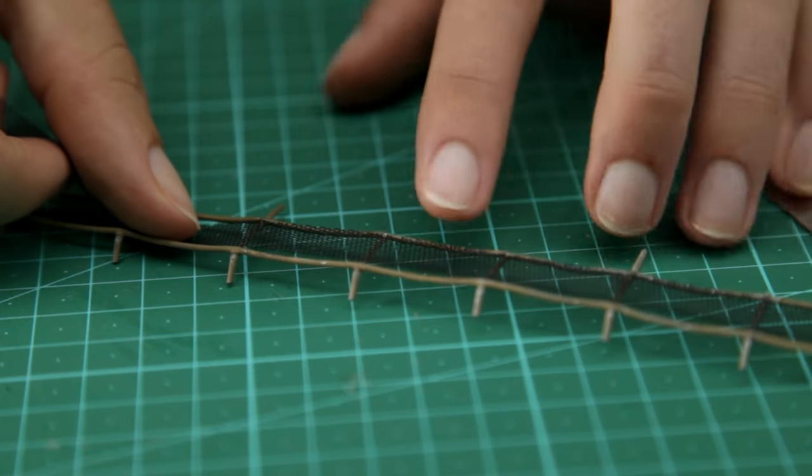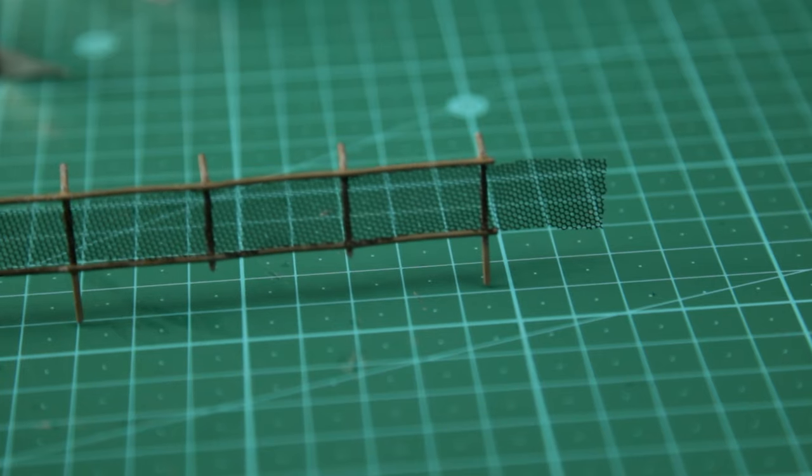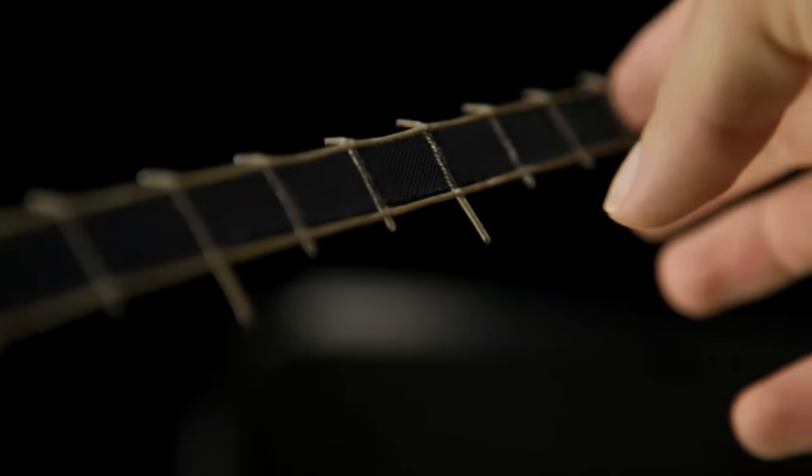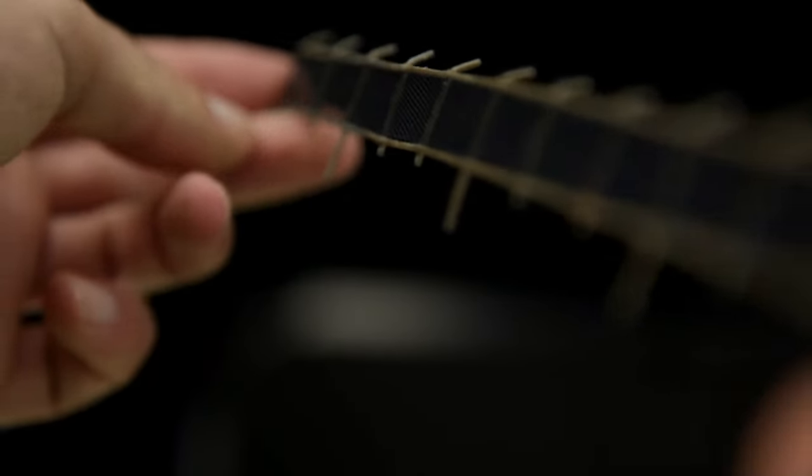The superglue I'm using is from Loctite and it's a gel superglue. It's quite expensive but it's worth it because it's easy to use and really strong. Once done this is how it now looks.